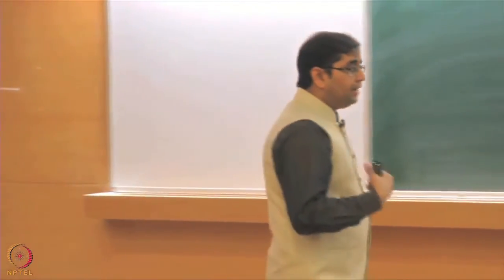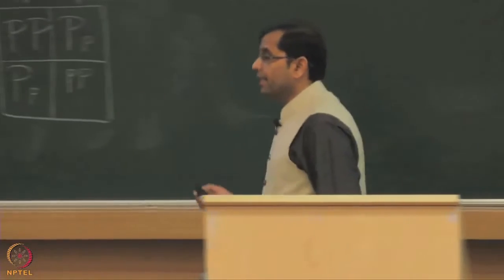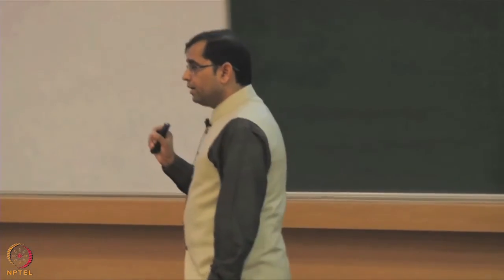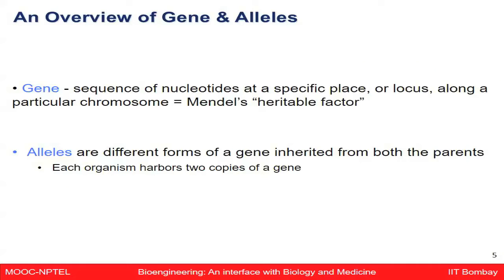Individuals have billions of cells. Each cell contains a nucleus, and within it the DNA contains chromosomes, from which we have the genes. What Mendel was thinking — what we now call a gene — is a sequence of nucleotides at a specific place containing heritable factors that can be passed from one to the next generation. People later realized this could be termed a gene.